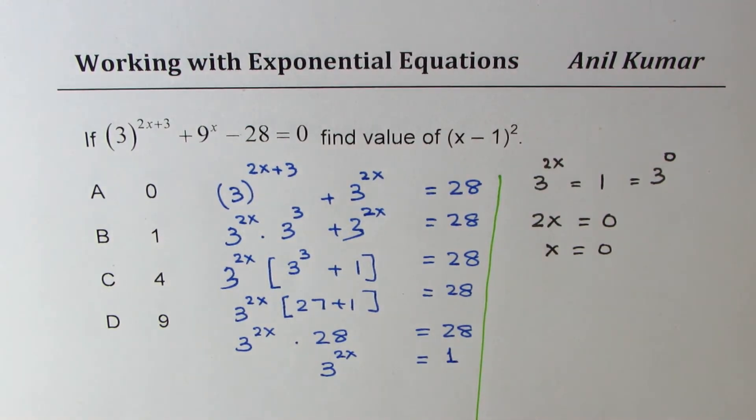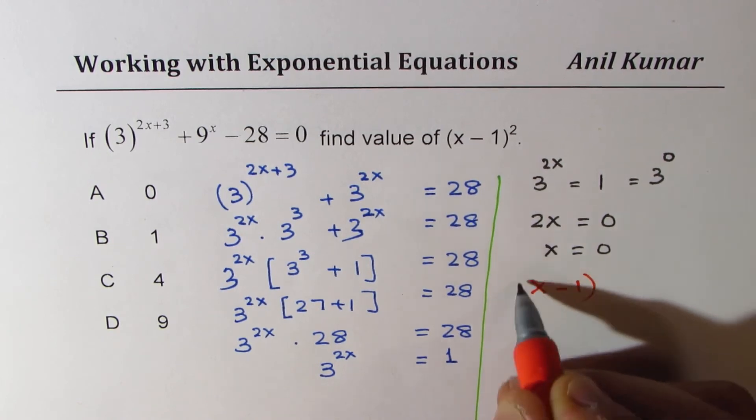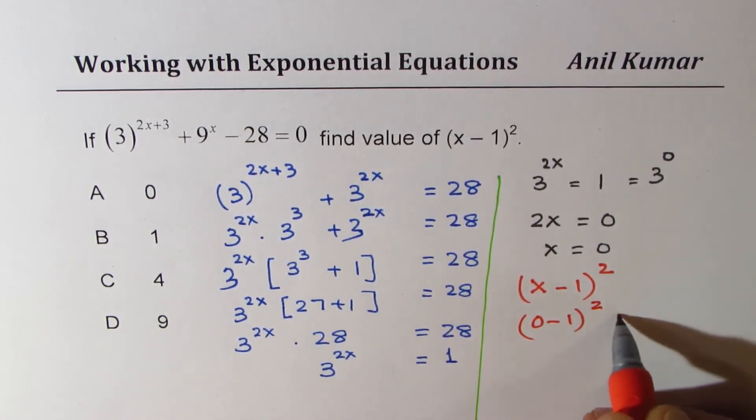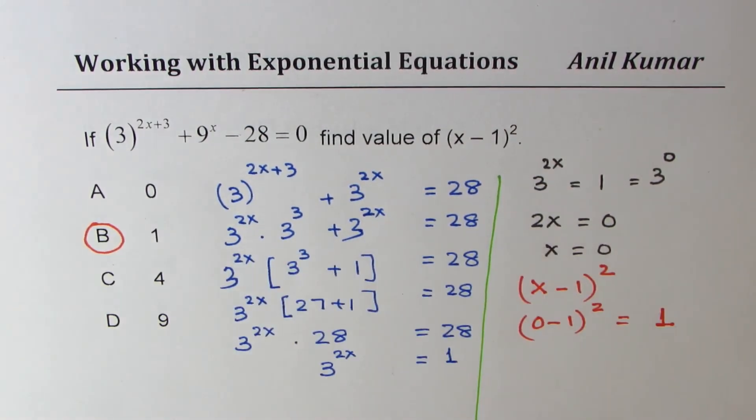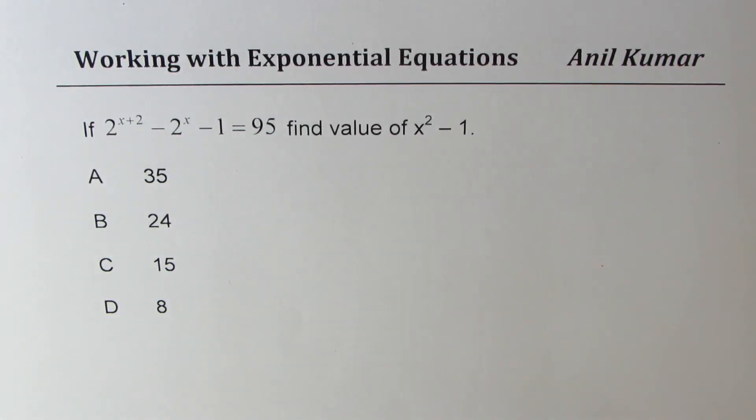Now, if x is 0, then what you need to find is x minus 1 whole square. Remember that. So we have 0 minus 1 whole square, which is positive 1. So option B is the right option. So I hope all these steps are clear. So that is how you should be solving them. So learn the techniques. Now, let's move on to the next question, which is similar kind, this time with powers of 2.